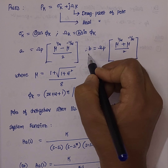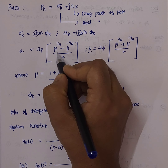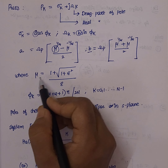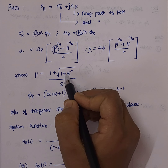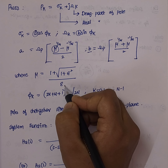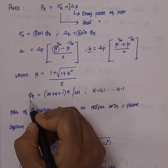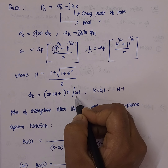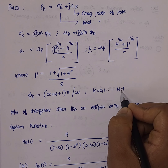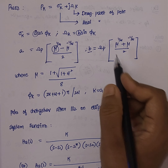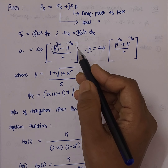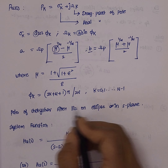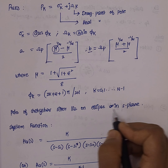Similarly, the b value is computed. The mu value is equal to (1 plus square root of 1 plus epsilon squared) divided by epsilon. The phi_k value is equal to (2k plus n plus 1) times pi divided by 2n, where k ranges from 0 to n minus 1. Using these values, we can calculate all poles, which lie on an ellipse in the s-plane.